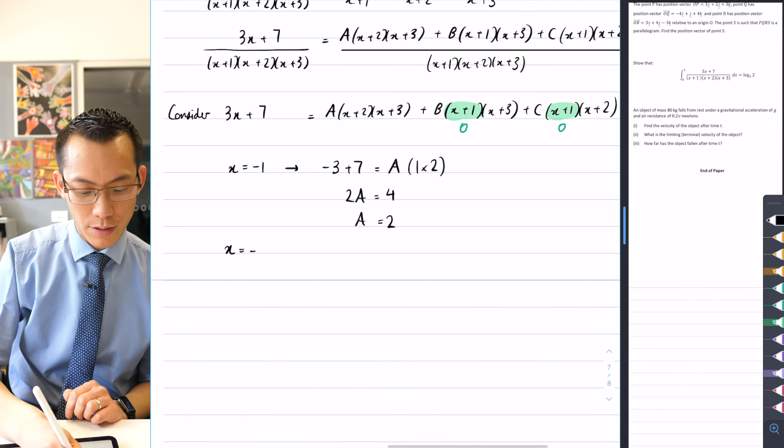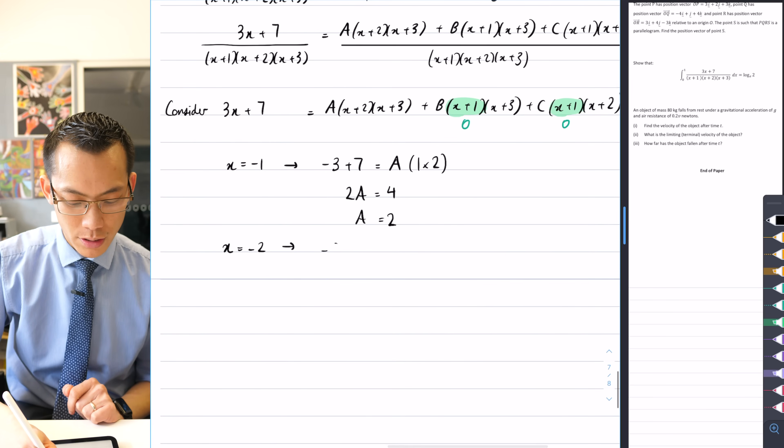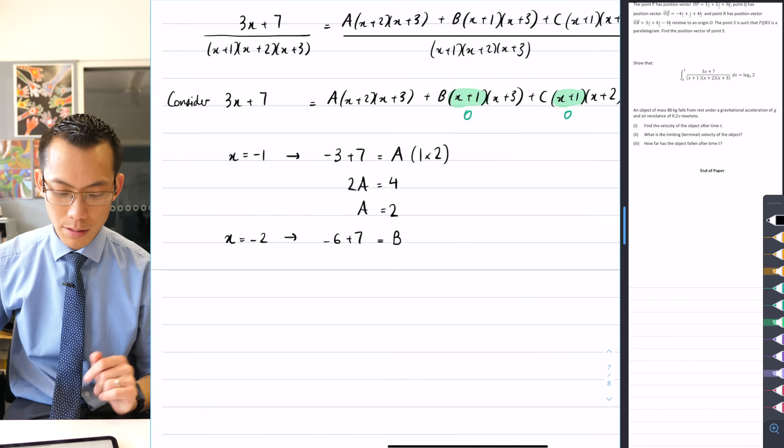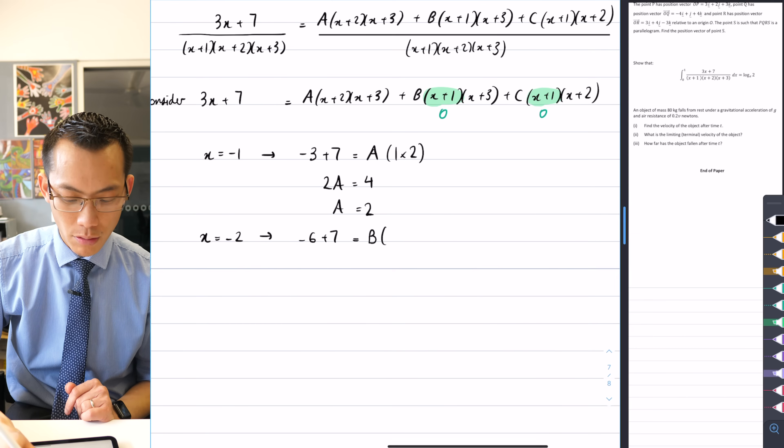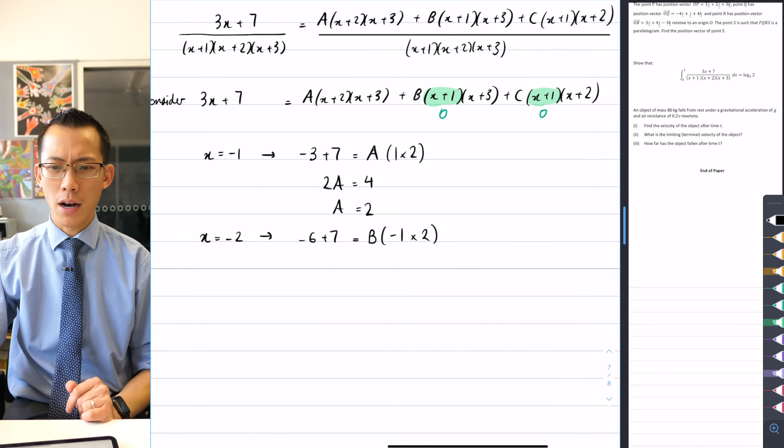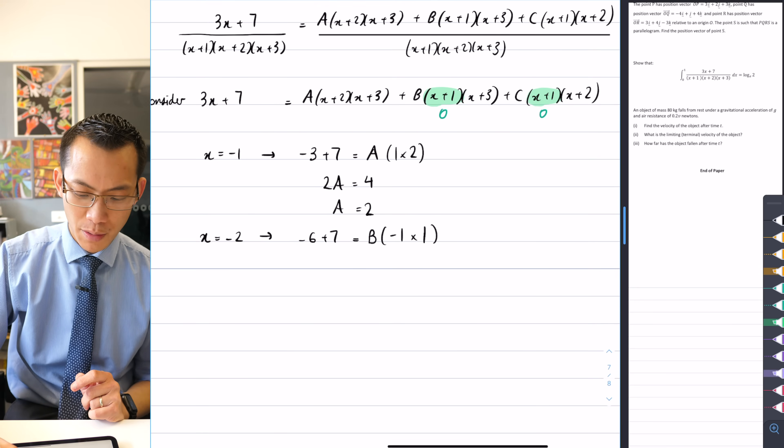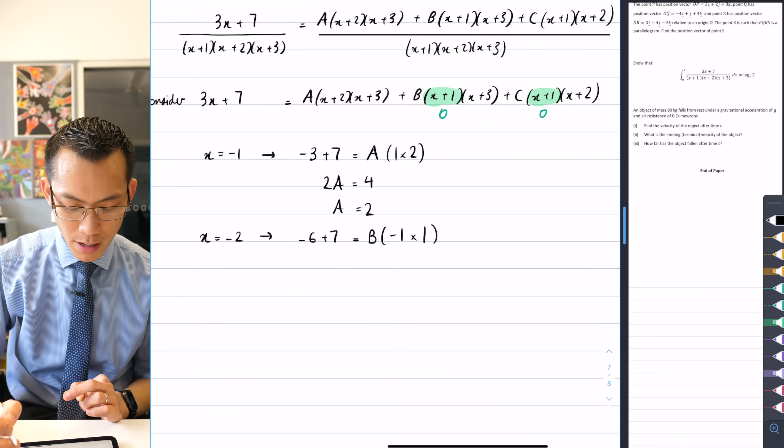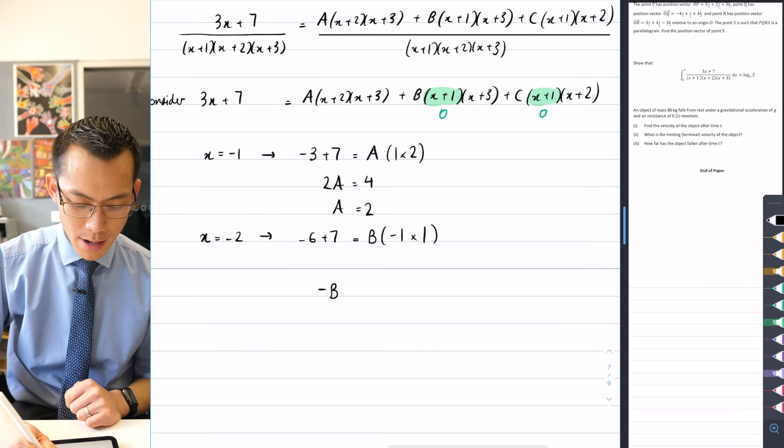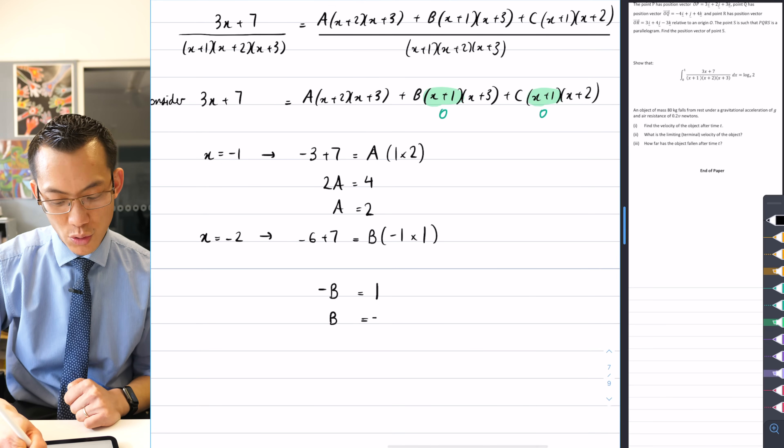And I'm just going to pull this same trick over and over for B and for C. I'm going to do x equals negative two. So what's that going to give me? On the left-hand side, it's going to give me negative six plus seven. On the right-hand side, it's going to give me B. Remember, all the A and C terms will disappear. So when you pop that in, it's going to give you negative one times one. That's a negative one times one because I'm substituting it into there. I'll put that minus B and then on the right-hand side, negative six plus seven is one. So B just gives you negative one.